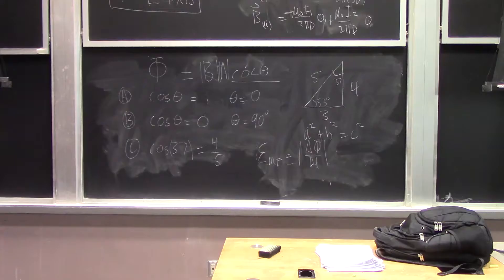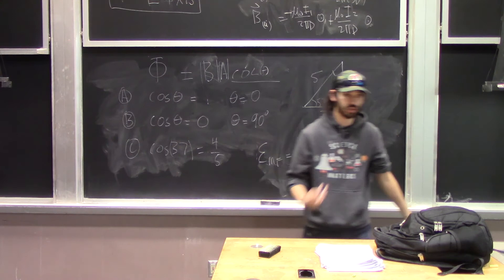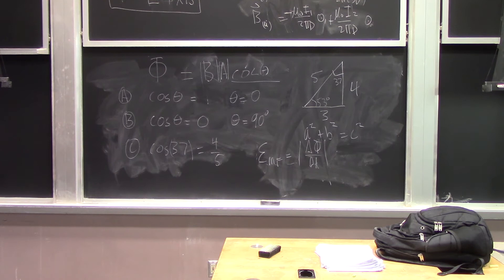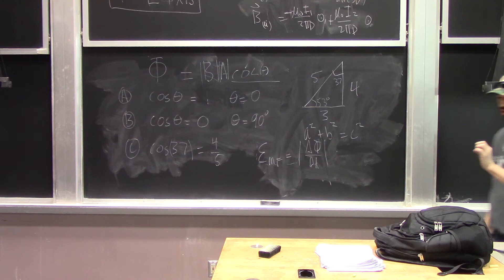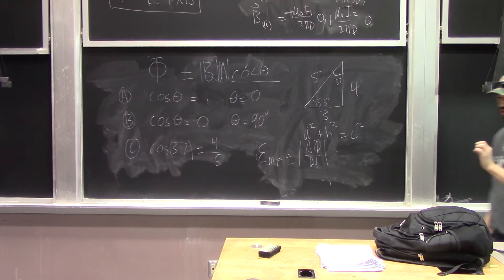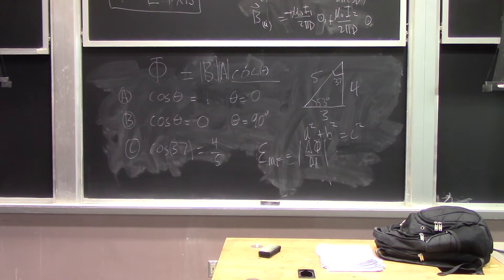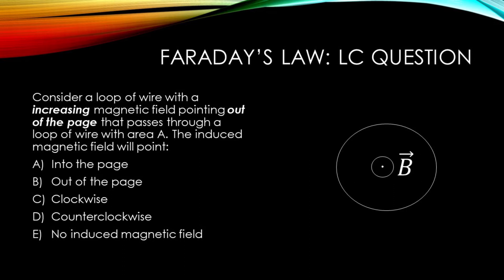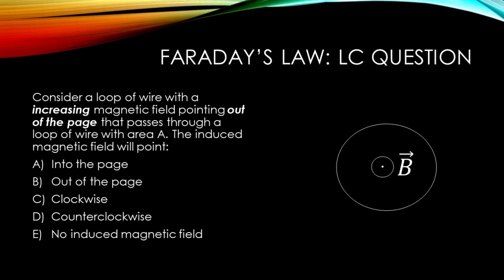Now that we know the magnetic flux is increasing — and the increasing magnetic field points out — we need to figure out what direction the induced magnetic field must point in order to oppose that change. So go ahead and think about this: how must the induced magnetic field point to oppose the increasing outward flux?